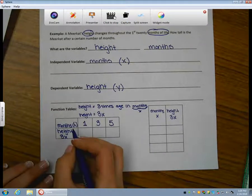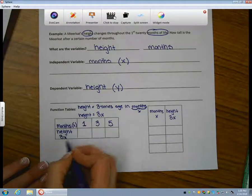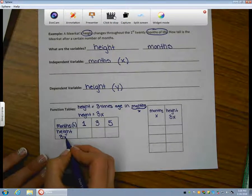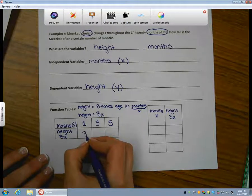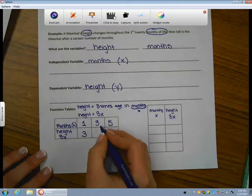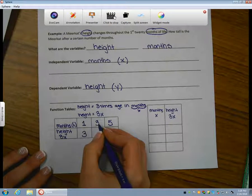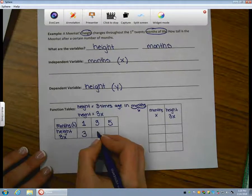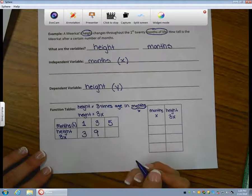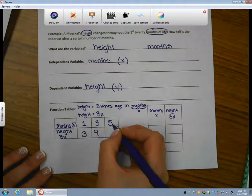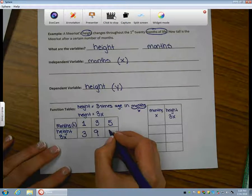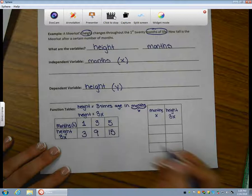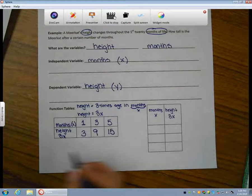Well, if one month has passed, and my rule is three times the number of months will give us the height, then three times one is three. When three months have passed, three times our rule three will give us nine is our height. When five months have passed, five times our rule 3x gives us 15. And if you needed to pause to show some substitution, that would be a great idea right down below.